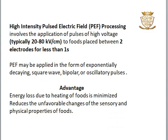Typically, we give pulses having a strength of 20 to 80 kV per cm. Pulse Electric Field may be applied in the form of exponentially decaying, square wave, bipolar, or oscillatory pulses. An advantage of this technology is that energy loss due to heating of food is minimized, and it also reduces the unfavorable changes of the sensory and physical properties of food.